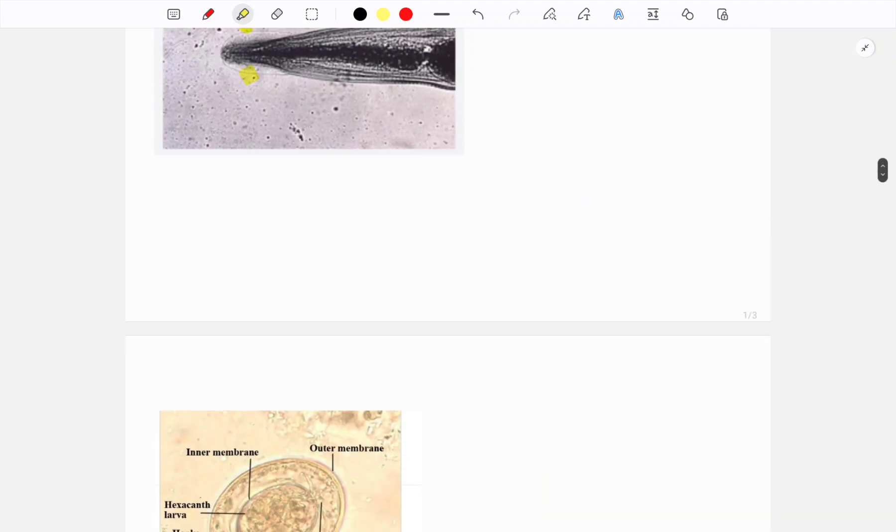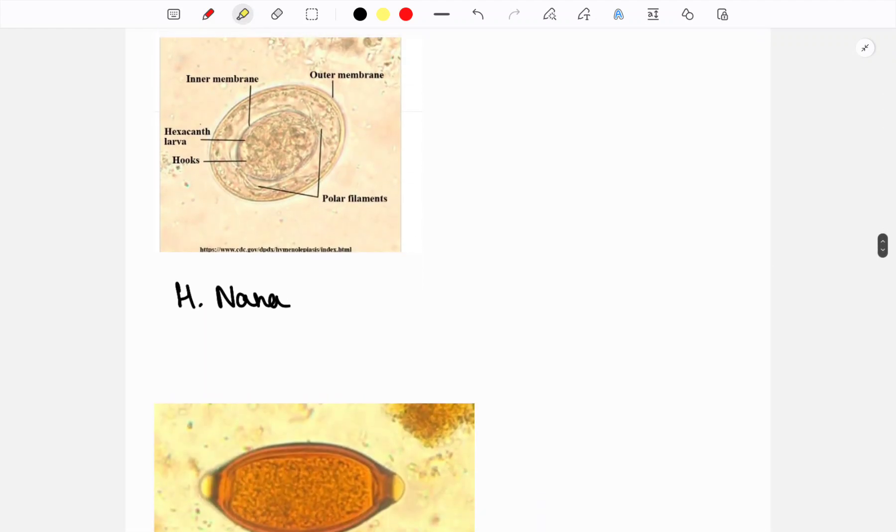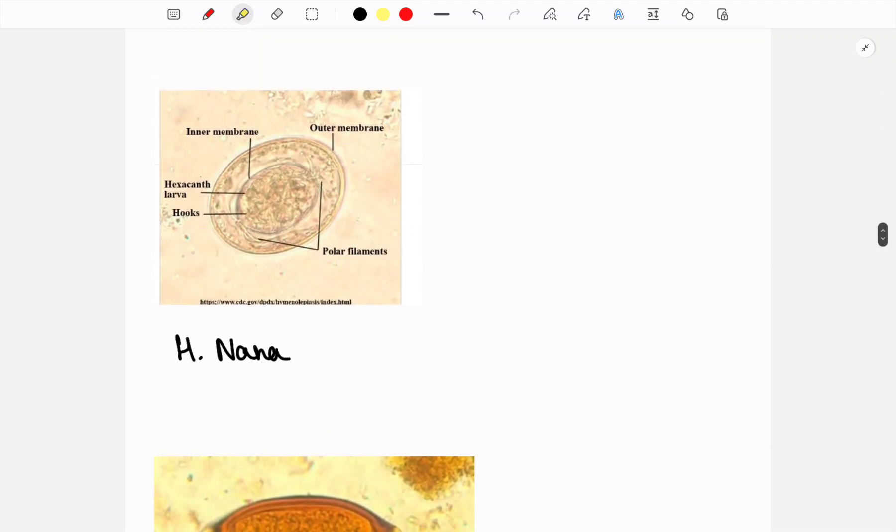The other options - the eggs of the worms are very important, so we will see them also. This is the egg of H. nana. It's the embryo of H. nana. It's called the hexacanth embryo because it has six hooklets here, and it has two polar knobs and many yolk granules. This is the hexacanth embryo of the cestode H. nana.